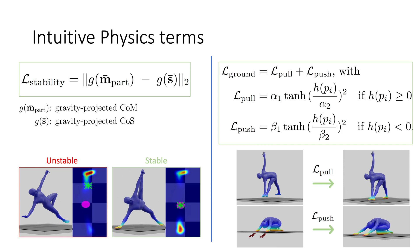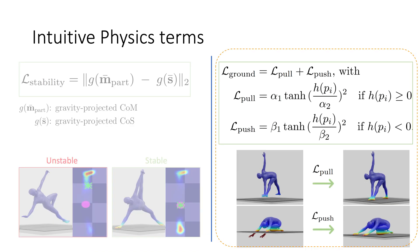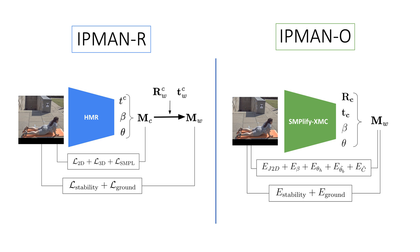Using the center of mass and center of pressure, we propose two intuitive physics terms that can be used for both optimization methods and in a training loss. First, the stability term encourages stable body poses, based on the insight that bodies whose gravity-projected center of mass lies close to the center of pressure are stable. Second, the ground contact term promotes realistic floor support and body-floor contact. IPMAN can be easily integrated into any SMPL-based method, implemented both as a regression model called IPMAN-R and an optimization method called IPMAN-O.